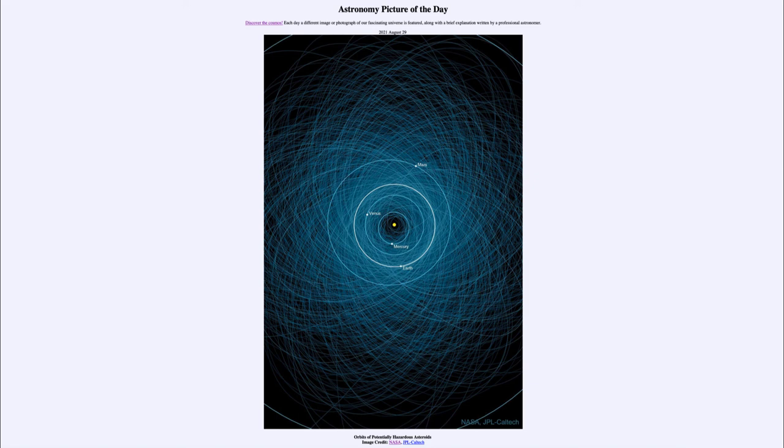That was our picture of the day for August 29th, 2021, titled Orbits of Potentially Hazardous Asteroids. We'll be back again tomorrow for the next picture, previewed to be Ice Sky Fire, so we'll see what that's about. Until then, have a great day everyone, and I will see you in class.